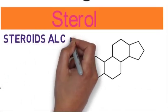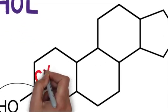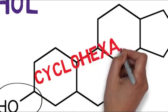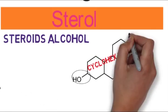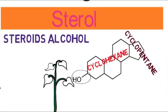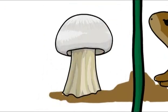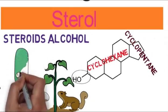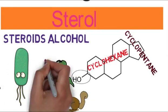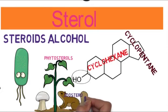In structure, three cyclohexane rings and one cyclopentane ring. They are naturally present in plants, animals, and fungi and also produced by some bacteria. Sterols from plants are called phytosterols and from animals are called zoosterols.